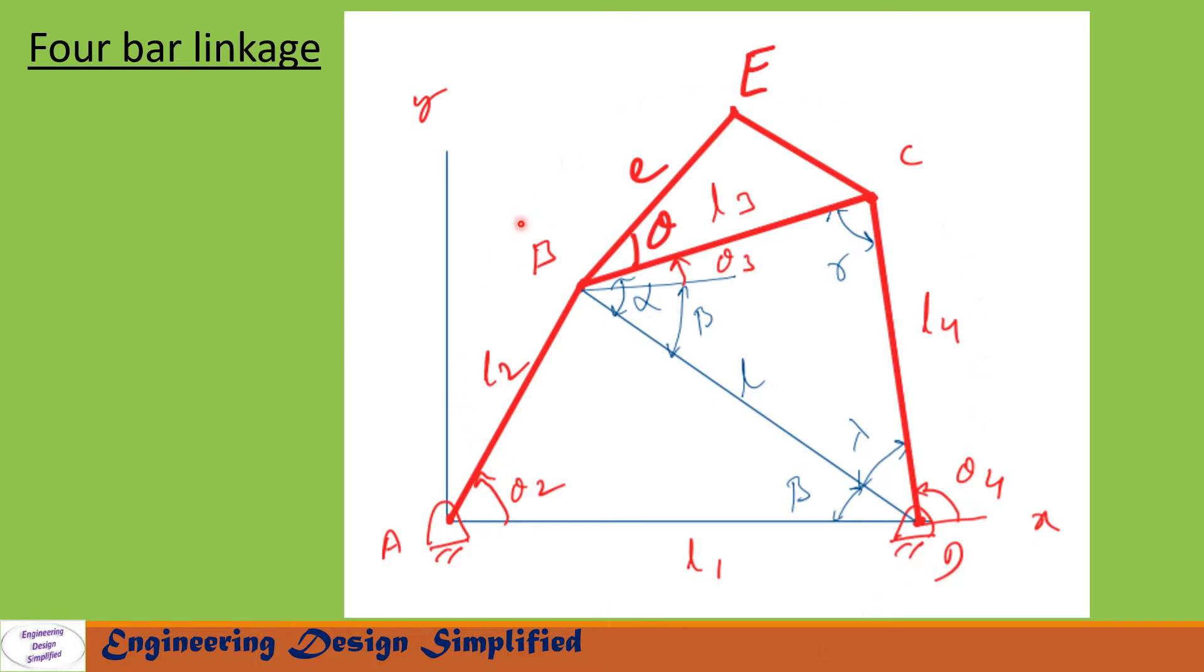Here is a typical four-bar linkage. Link AD is the fixed link with length L1. Link AB is the crank with length L2, positioned at angle theta2 from horizontal. Link BC is the coupler with length L3.